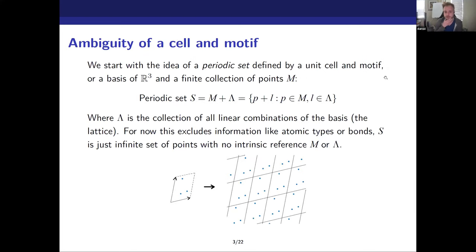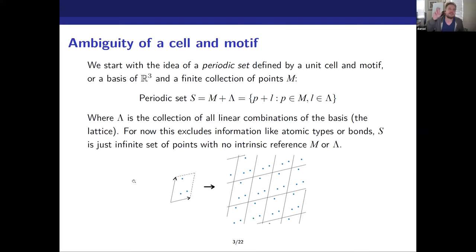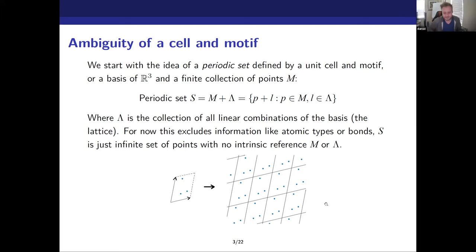Mathematically, a periodic set is a finite collection of points and the basis of the space — a unit cell and a motive. Three non-degenerate vectors form the unit cell, and the collection of points is generally thought of as being inside that unit cell. You add that finite collection of points to every combination of those basis vectors — the lattice — and you end up with an infinite set of points. Intrinsically, that infinite set has no reference to the unit cell or motif chosen, which is part of the problem.